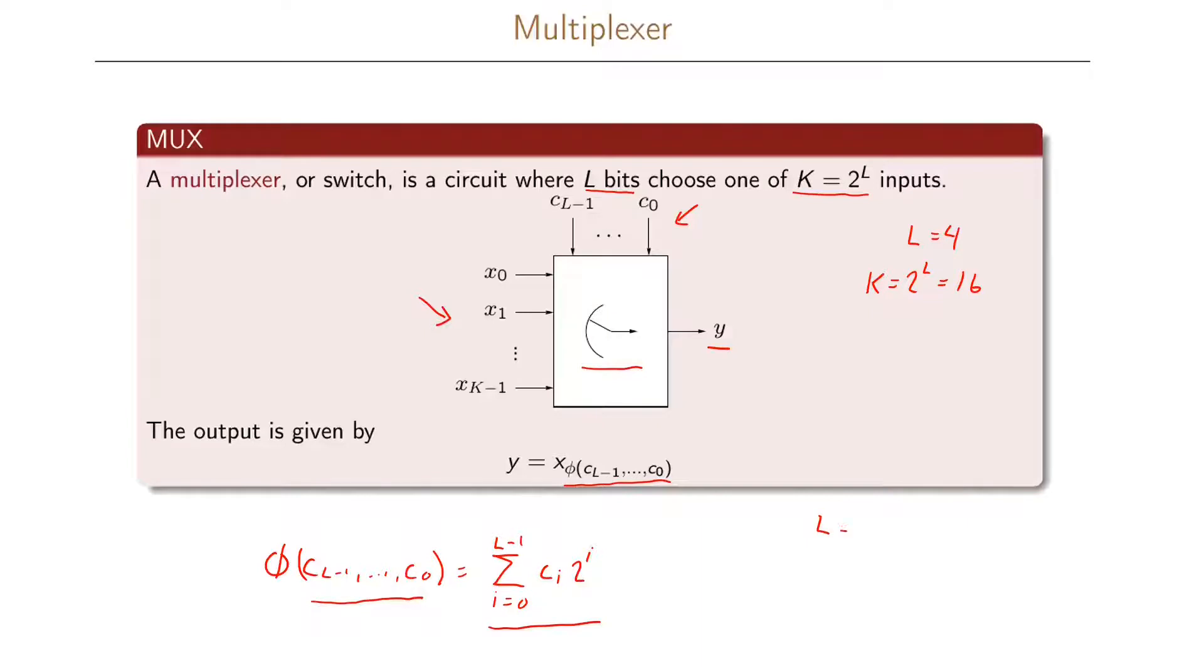If we continue the example where we have L equals 4, it means that we have c3, c2, c1, and c0. Let us assume in this case that we will have the input 0001. So c0 is a 1 and the other c's are 0. This will give that phi of 0001 is equal to 1 in decimal representation.